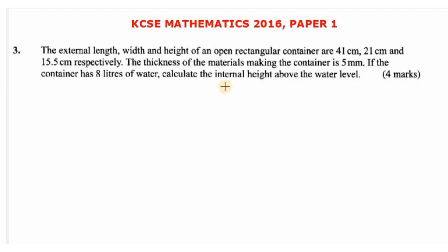Question number 3 is on volume and capacities. The question reads: the external length, width, and height of an open rectangular container are 41 centimeters, 21 centimeters, and 15.5 centimeters respectively. The thickness of the materials making the container is 5 millimeters. If the container has 8 liters of water, calculate the internal height above the water level.